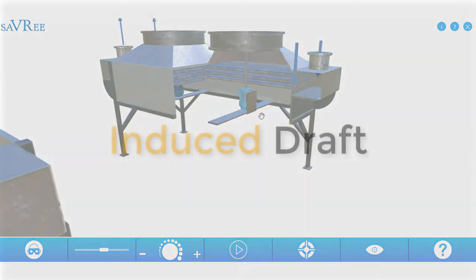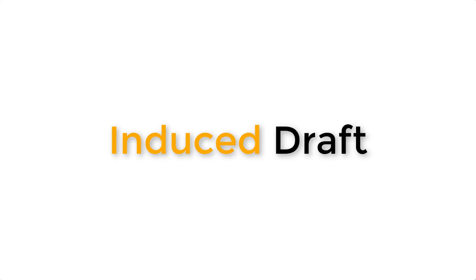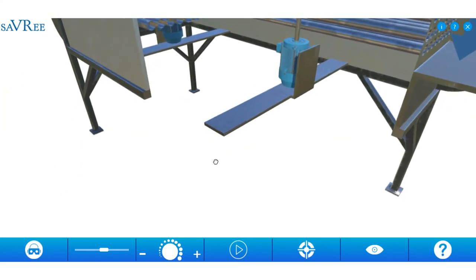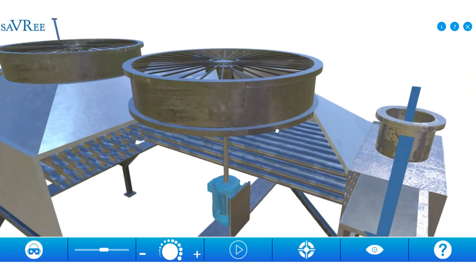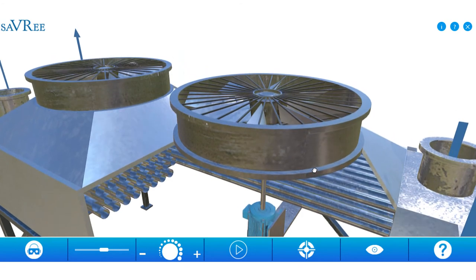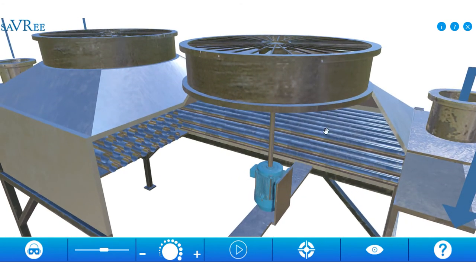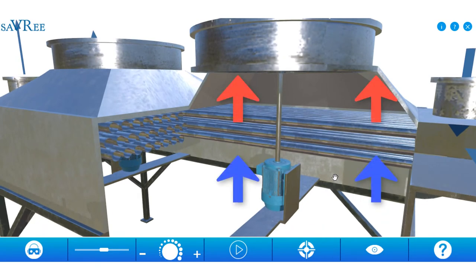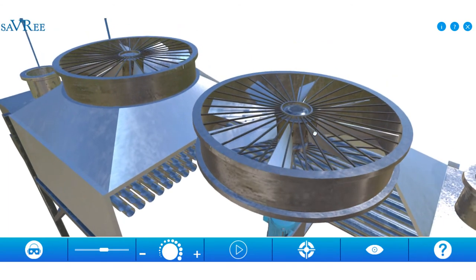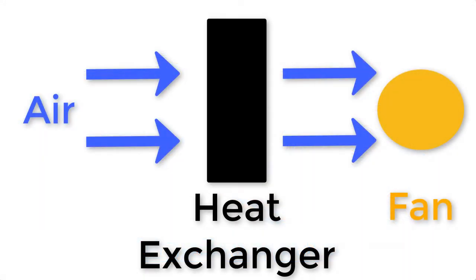Now let's have a look at an induced draft cooling cell, or cooling tower. The same setup — the liquid comes in, travels through, and when it exits it's going to be cooler because it's being cooled down by the air. The difference here is the fan is on the upper side of the heat exchanger. It's inducing a draft, which means the air passes over the heat exchanger before it passes through the fan. So induced draft means we're passing over the heat exchanger first, and then across the fan.